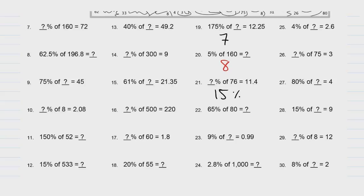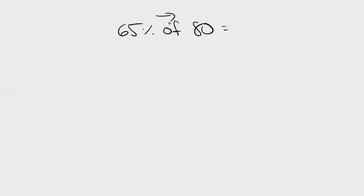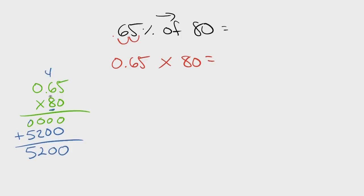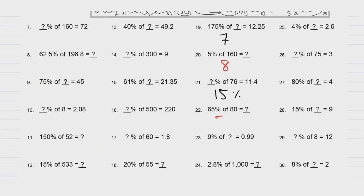Problem 22: 65% of 80. We can go forward this way. Change to decimal: move 1, 2, getting 0.65. Change 'of' to multiplication and we get 80. Multiply 0.65 times 80. We get 52. 65% of 80 is 52. This is 52.